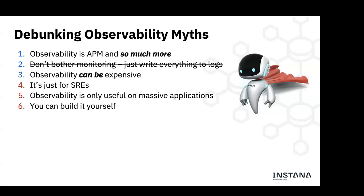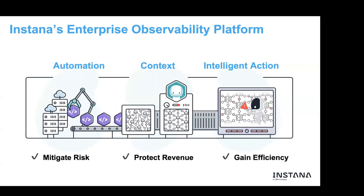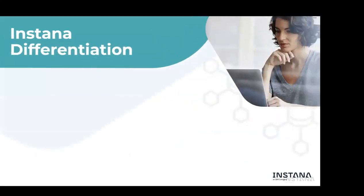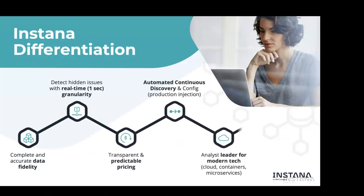Observability can be expensive, but it doesn't have to be. Instana has simple, transparent, fair pricing designed to deliver no surprise charges, and it doesn't nickel-and-dime — all functionality is included in a single price. When thinking about observability, it's built on metrics, traces, and logs. But what matters is how you go about getting that observability, which we frame in terms of automation, context, and intelligent actions.